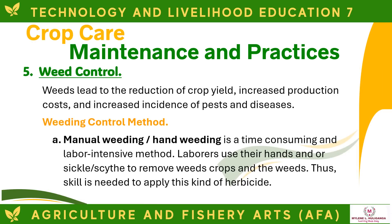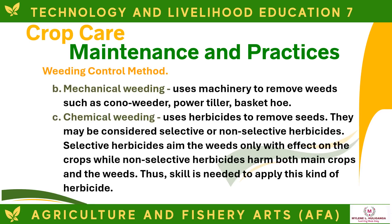Weed control is important because weeds lead to reduction of crop yield, increased production costs, and increased incidence of pests and diseases. Manual or hand weeding is time-consuming and labor-intensive, using hands and sickle or scythe to remove weeds. Mechanical weeding uses machinery such as a Kona weeder, power tiller, or basket hoe. Chemical weeding uses herbicides — selective herbicides target only weeds with little effect on crops, while non-selective herbicides harm both main crops and weeds. Skill is needed to apply herbicides properly.